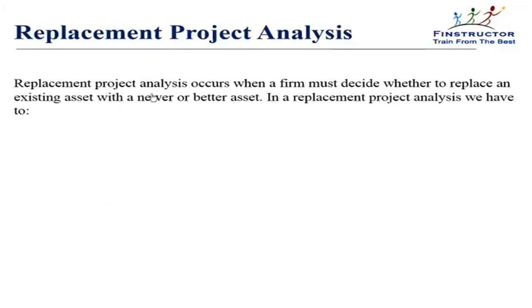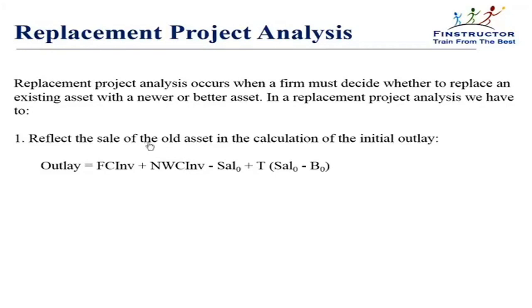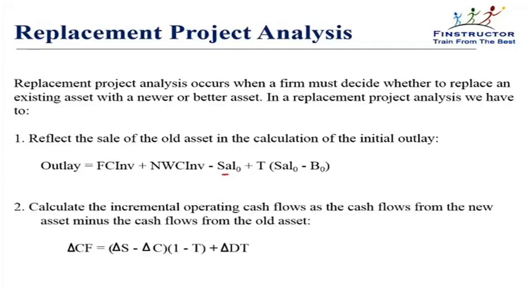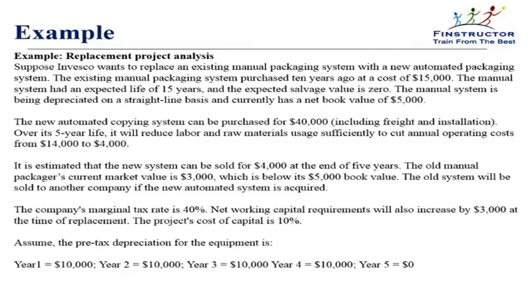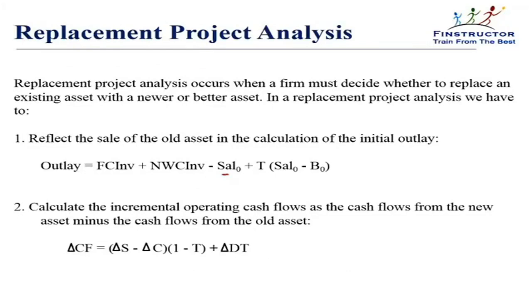In a replacement project, the firm decides whether to replace an existing asset with a newer one. We must incorporate the cash inflow from selling the old asset — the salvage value adjusted for tax — in the initial investment outlay. When calculating operating cash flows, it is the incremental benefit we must assess: what additional benefit does the new investment bring over and above what the old asset was already providing.